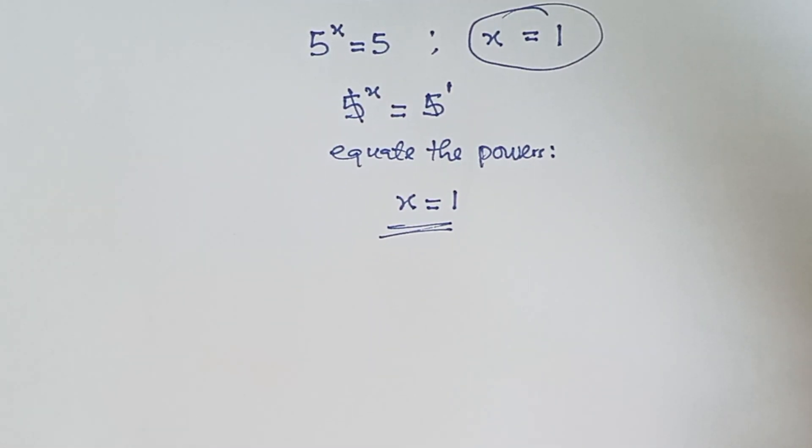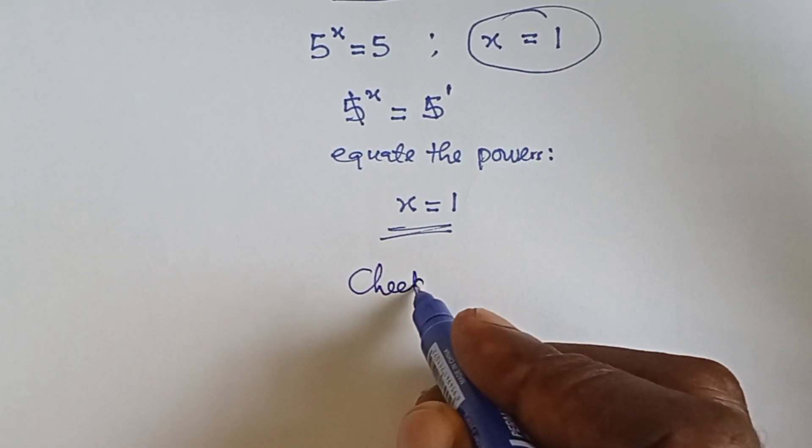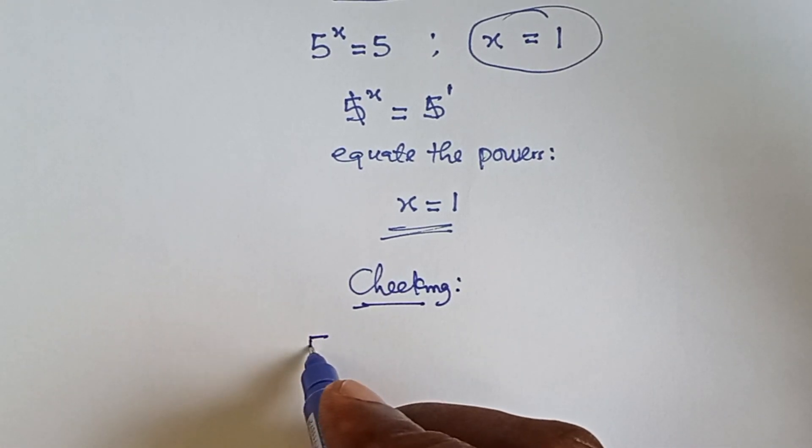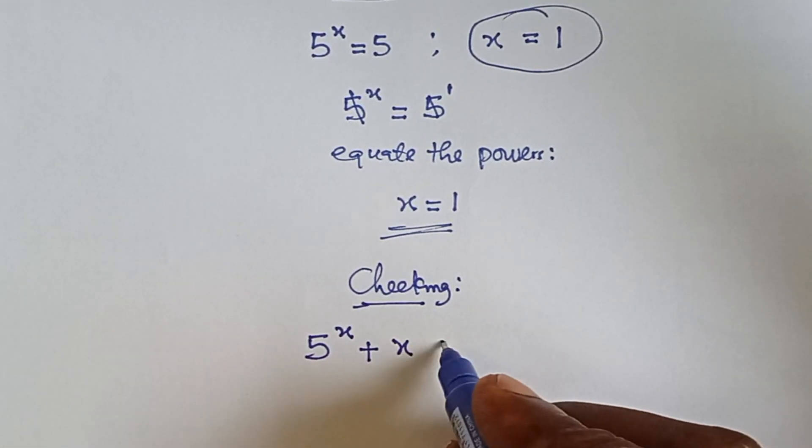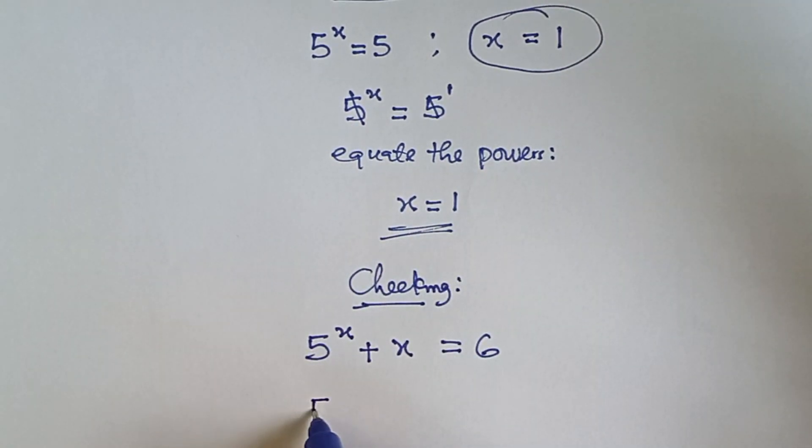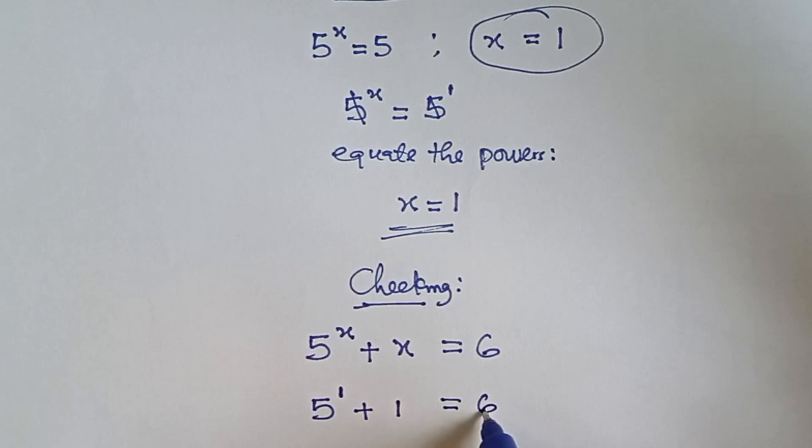Now, let's check. We have 5 raised to the power x plus x equals to 6. So, we write x to be 1, 5 raised to the power 1 plus 1 equals to 6.